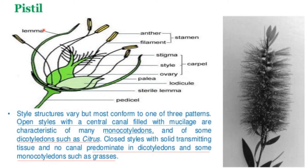The pistil is an integrated organ comprising stigma, style, and ovary. The stigma is covered with unicellular or multicellular papillae, which are modified epidermal cells. The surface of the stigma may be wet or dry, meaning copious or sparse secretion respectively. This secretion contains lipid, carbohydrate, protein, and water, and is the site of pollen recognition, hydration, and germination.